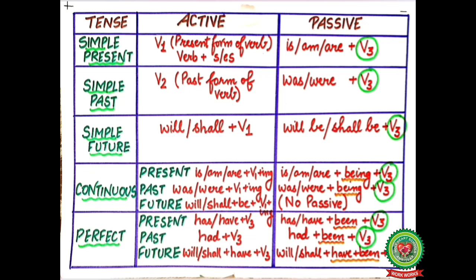Now we will learn conversion of active voice into passive voice through mapping. In passive voice, verb is always changed into its past participle form, V3. If your active voice is in simple present tense — verb contains 's' or 'es' — then in passive voice you will add helping verb is, am, or are followed by past participle. If the sentence is in simple past tense, we will add helping verb was or were followed by past participle.